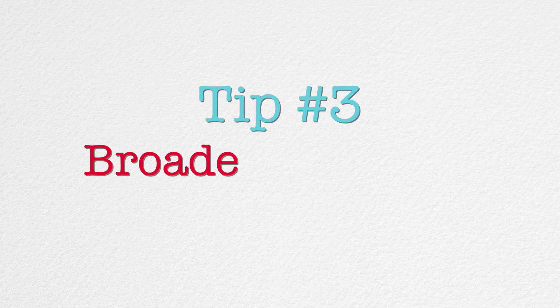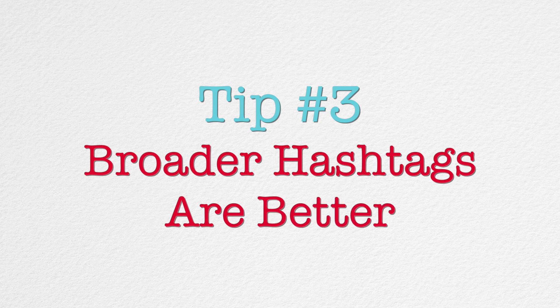That leads me to tip number three: your hashtags want to be as broad as possible when it comes to your Instagram stories. This is actually a little bit the opposite strategy I recommend for your posts in the Instagram newsfeed. With newsfeed posts it's better to be more specific, but keep in mind your Instagram stories are here today and gone in 24 hours. So having hashtags that are a little bit broader will actually help your content get seen within those 24 hours.